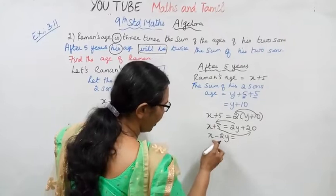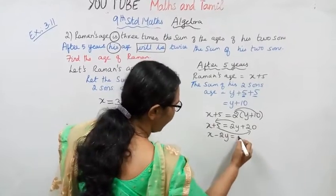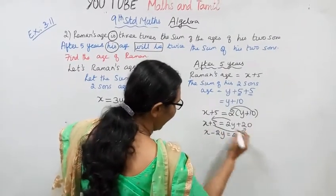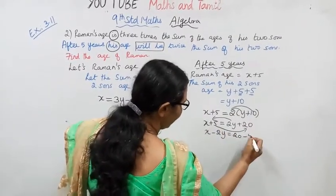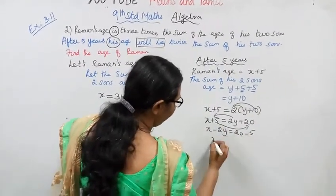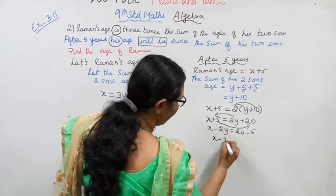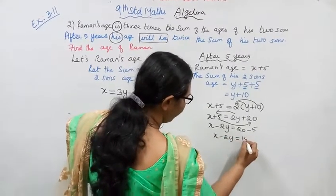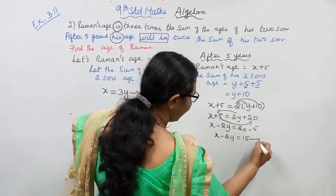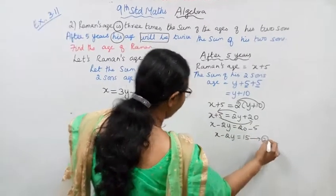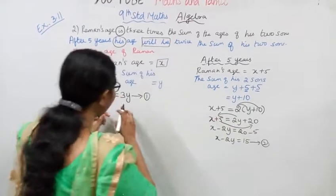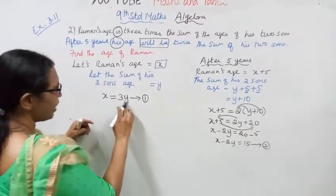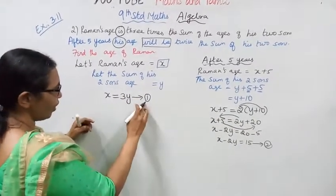Right hand side: this gives minus 2y and minus 5. So x minus 2y equal to 15. This is the second equation.